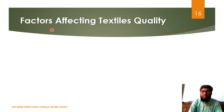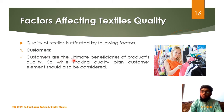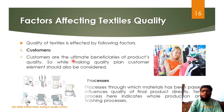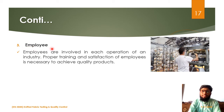Factors affecting textile quality: the first factor is customers, who are the ultimate beneficiaries of product quality. The industry should design the product according to how customers use it, because the usage varies from area to area — for example, people living in Pakistan will use the product differently than people living in Europe. The second factor is processes — the process through which the raw material passes for conversion into a product also justifies the quality of the final product, so the product should pass through optimum processes. The third factor is employees — employees are involved in each operation of an industry, and if they are well-trained and satisfied, they will work properly to produce quality products.